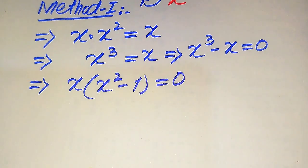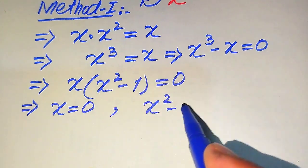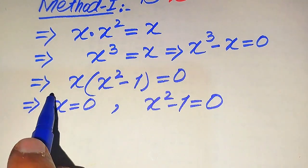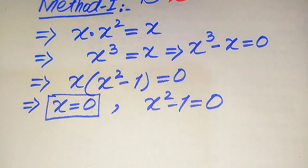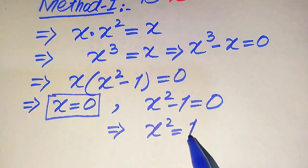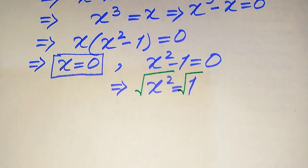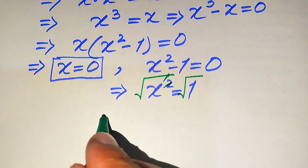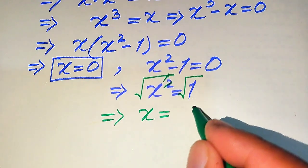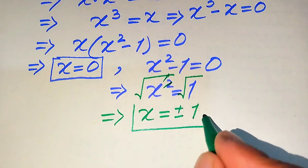We split this into two cases. The first case gives x equals zero. The second case is x squared minus one equals zero. Moving minus one to the right hand side gives x squared equals one. Taking the square root on both sides, the square root and the square cancel, giving x equals the square root of one, which equals one.